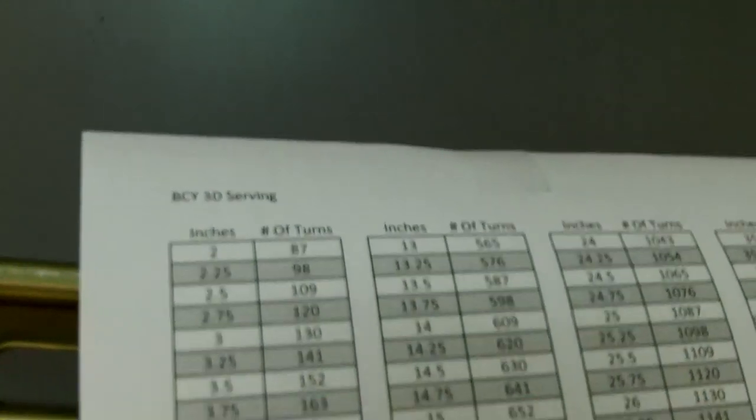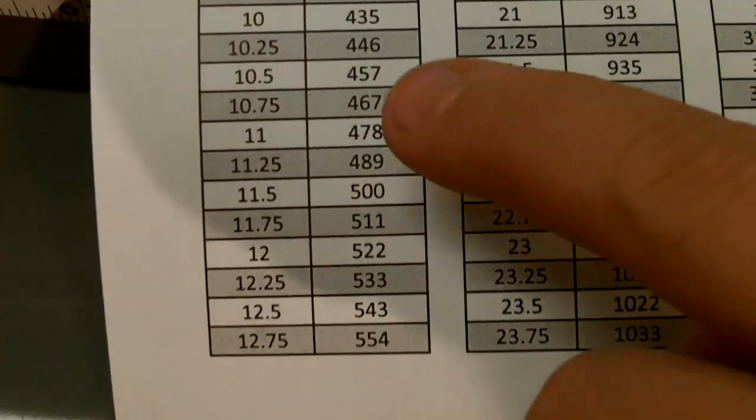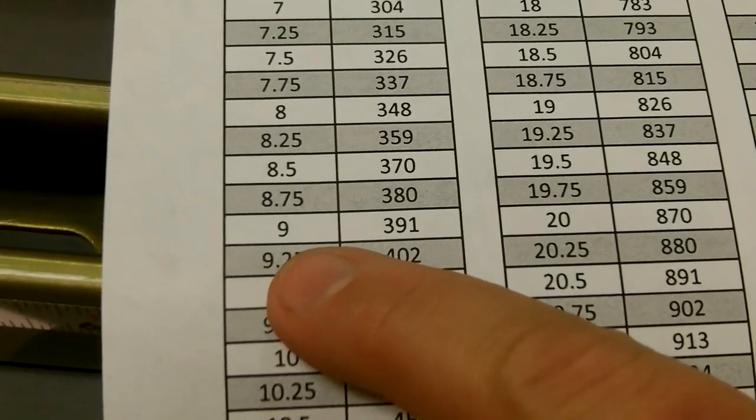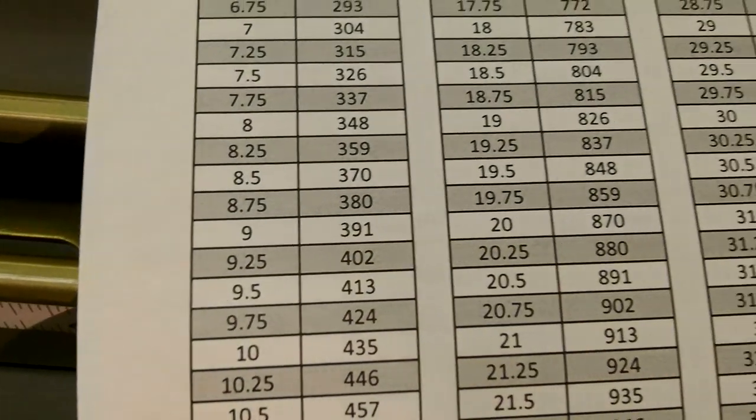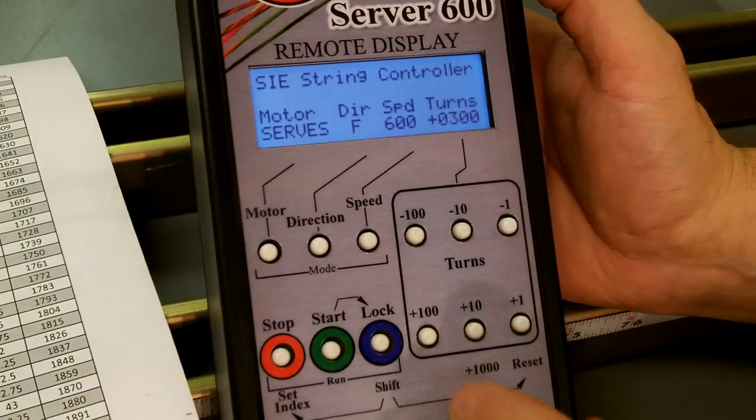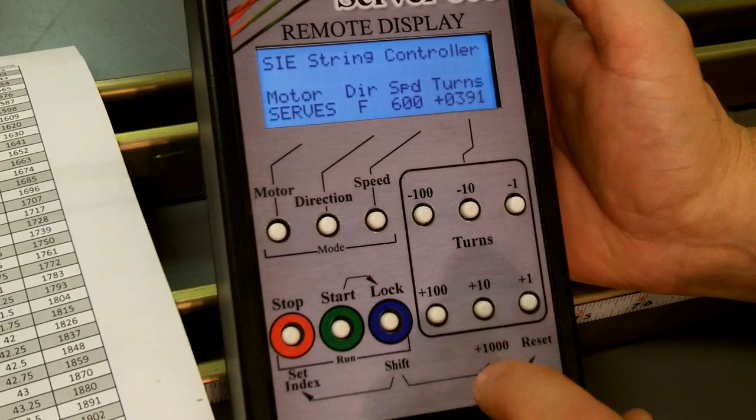We've made up charts for BCY 3D and BCY 14,000 Halo for the number of turns it'll take to serve a length of serving. So I'm going to put in nine inches of serving, so that's 391 turns.